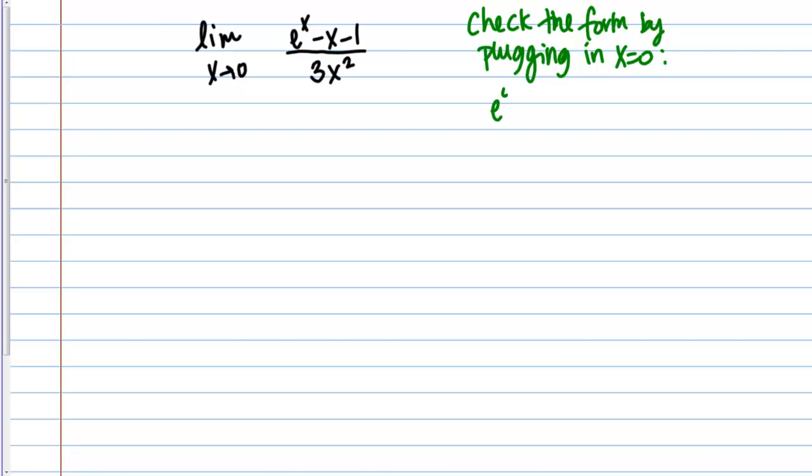We're going to check the form by plugging in X equals 0. If we do that, I'm going to get E to the 0 minus 0 minus 1 over 3 times 0 squared. E to the 0 is 1. This ends up being 1 minus 1 over 0, so 0 over 0. I see that I get the form of 0 over 0.